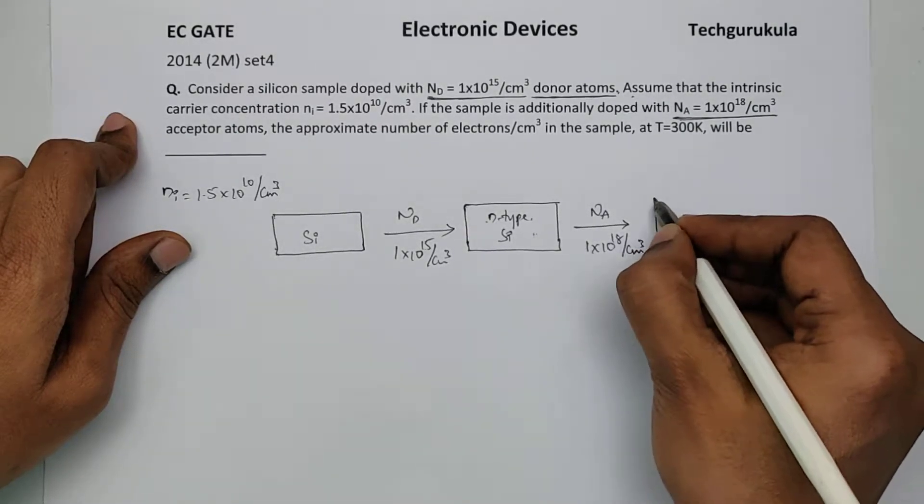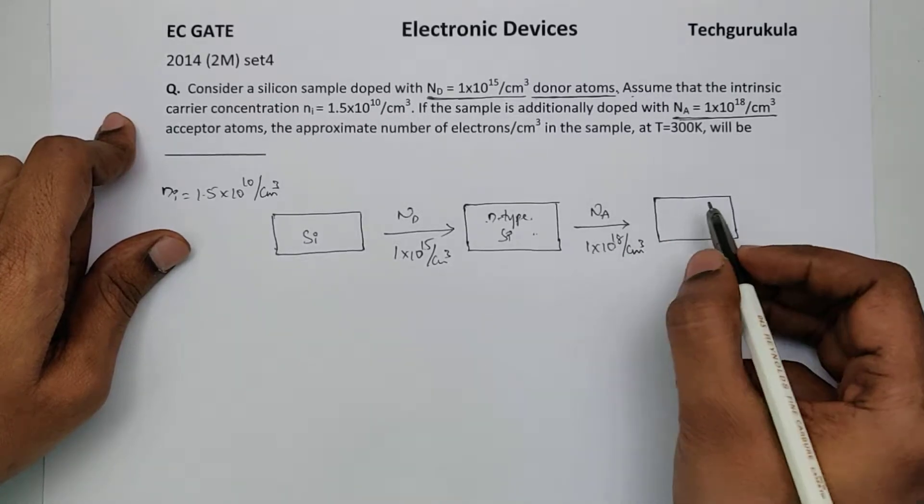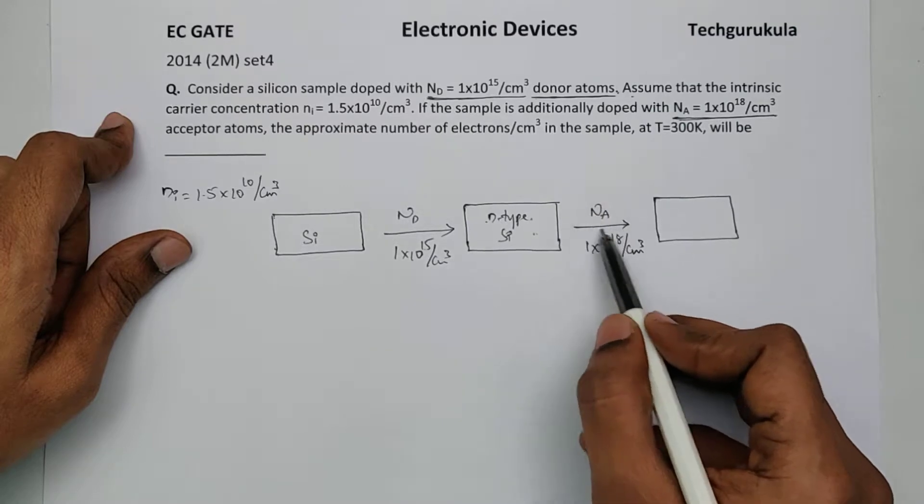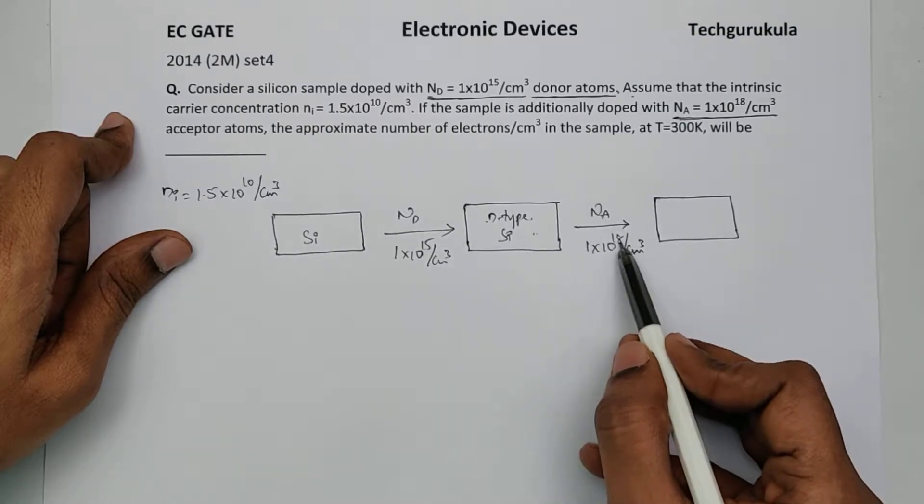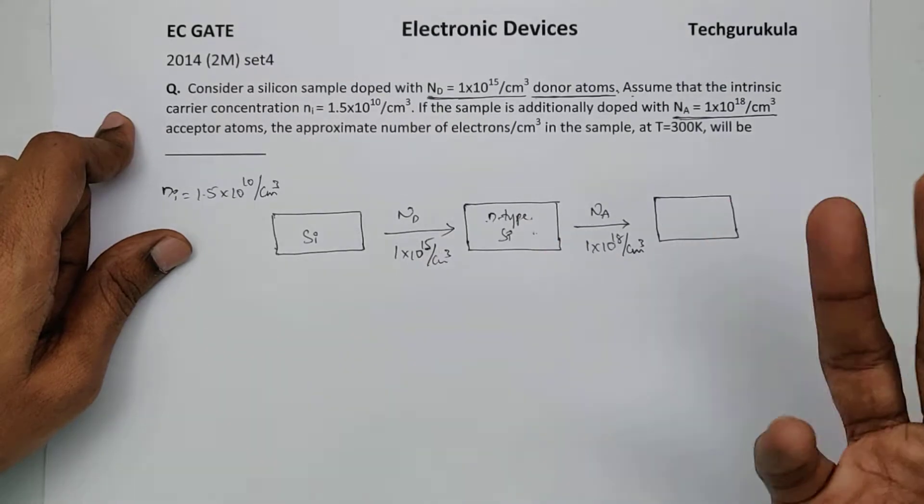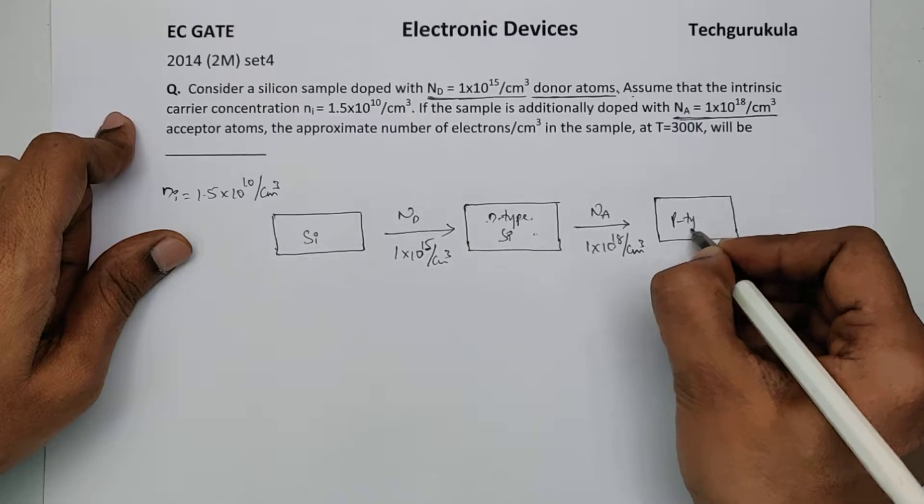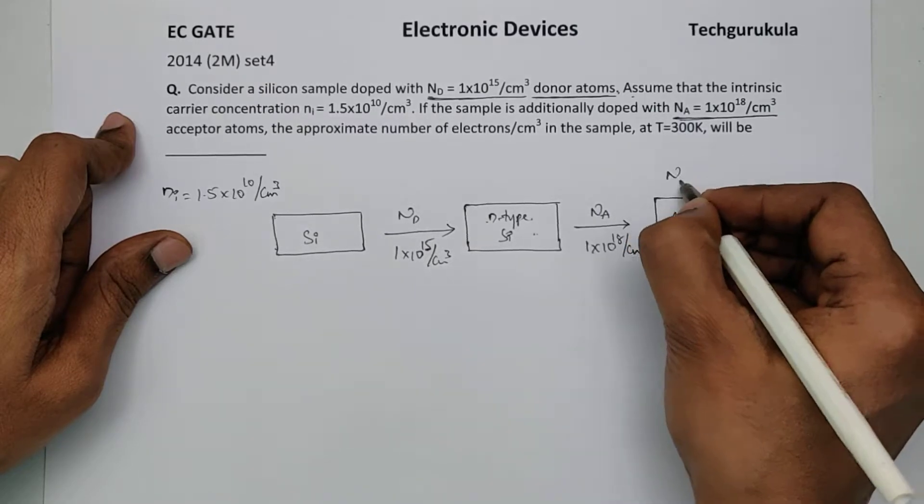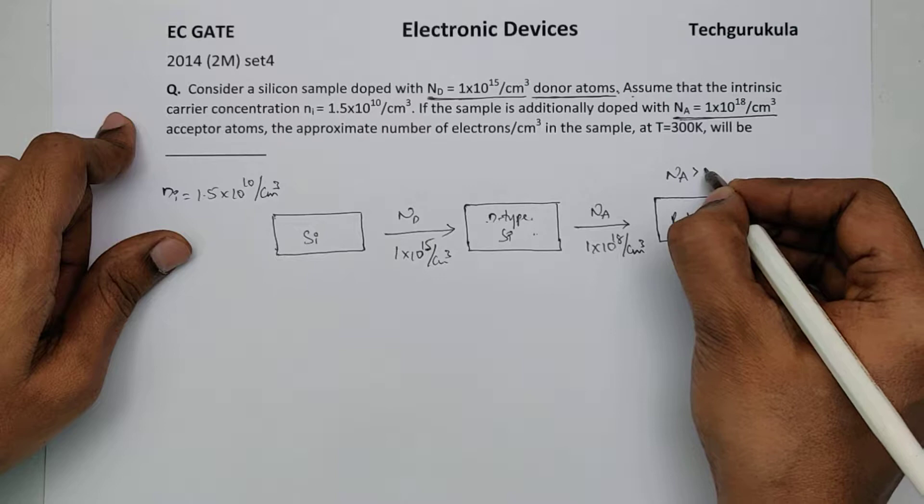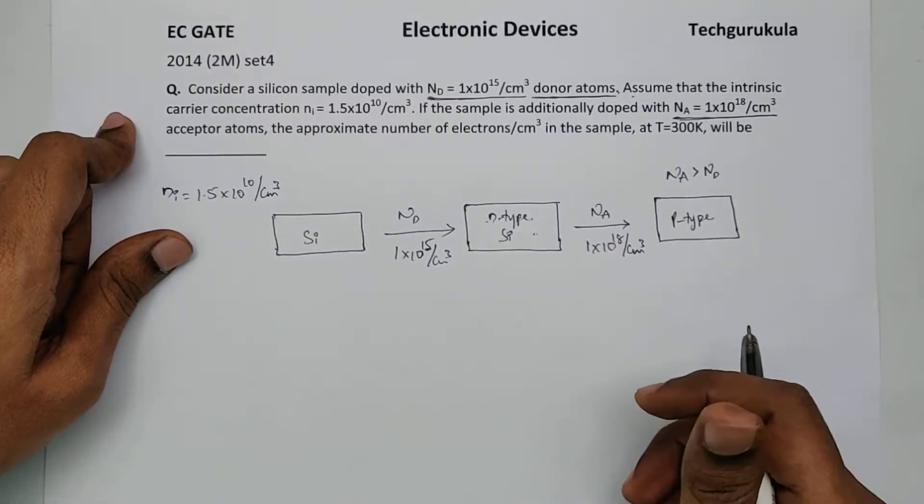Now what will happen to this material, will this be n-type or p-type now? If you see here, Na is 1 times 10 power 18 which is really very high compared to 10 power 15, three orders of magnitude. So hence this will become a p-type semiconductor because Na is greater than Nd. In fact, it is three orders of magnitude greater.